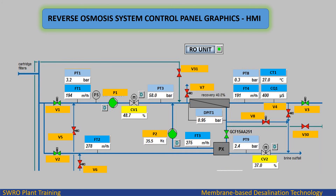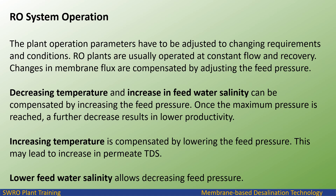The reverse osmosis system is monitored and controlled via a control panel with HMI graphics, and the operator controls the RO unit from the DCS system. The plant operation parameters have to be adjusted to changing requirements and conditions. RO plants are usually operated at constant flow and recovery. Changes in membrane flux are compensated by adjusting the feed pressure. Decreasing temperature and increases in feed water salinity can be compensated by increasing the feed pressure.